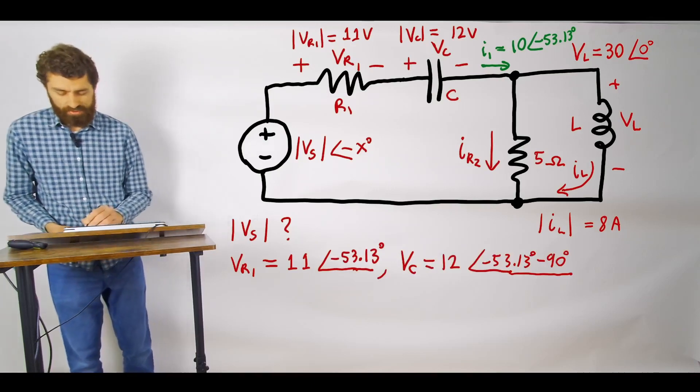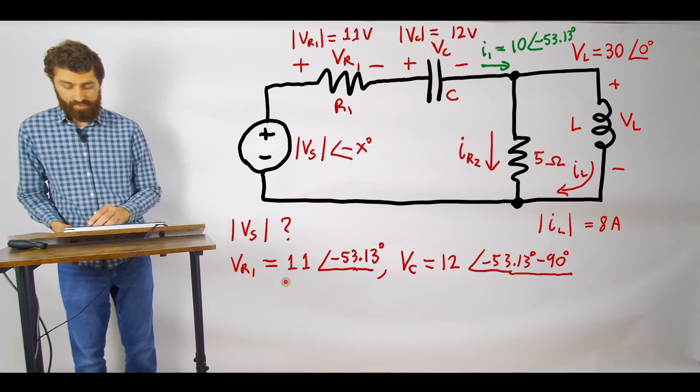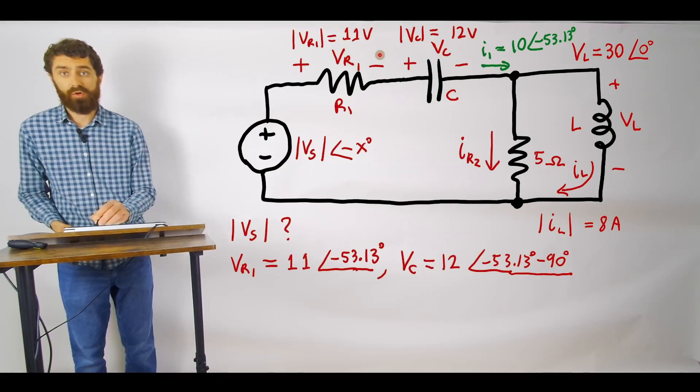Let's first make sure we understand what we're doing with the voltages here. So Vr1 that's going to have a magnitude of 11 volts and that's just because it was given to us over here